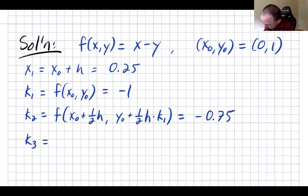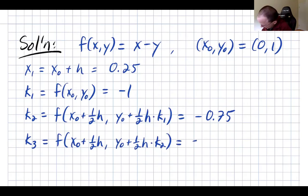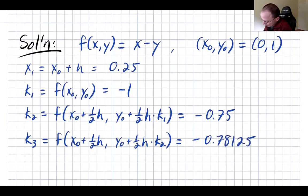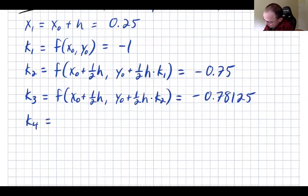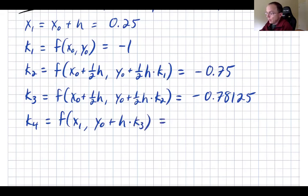Then we do the second half-step slope estimate k₃, this time using the k₂ slope. That gives k₃ = −0.78125. And now k₄ — a full step. We use the value of x₁ and do a full step with k₃, giving k₄ = −0.554687 5.